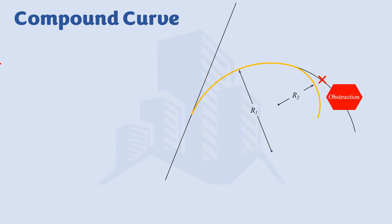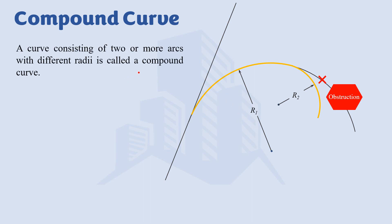So as a whole, from starting to the end, we are going to have one curve which is called compound curve. A compound curve is actually a curve that consists of two or more arcs with different radii. In this case we have two different radii — combining them together we get a compound curve. We could have multiple radii, three or more, but in this case I have shown you two radii only.